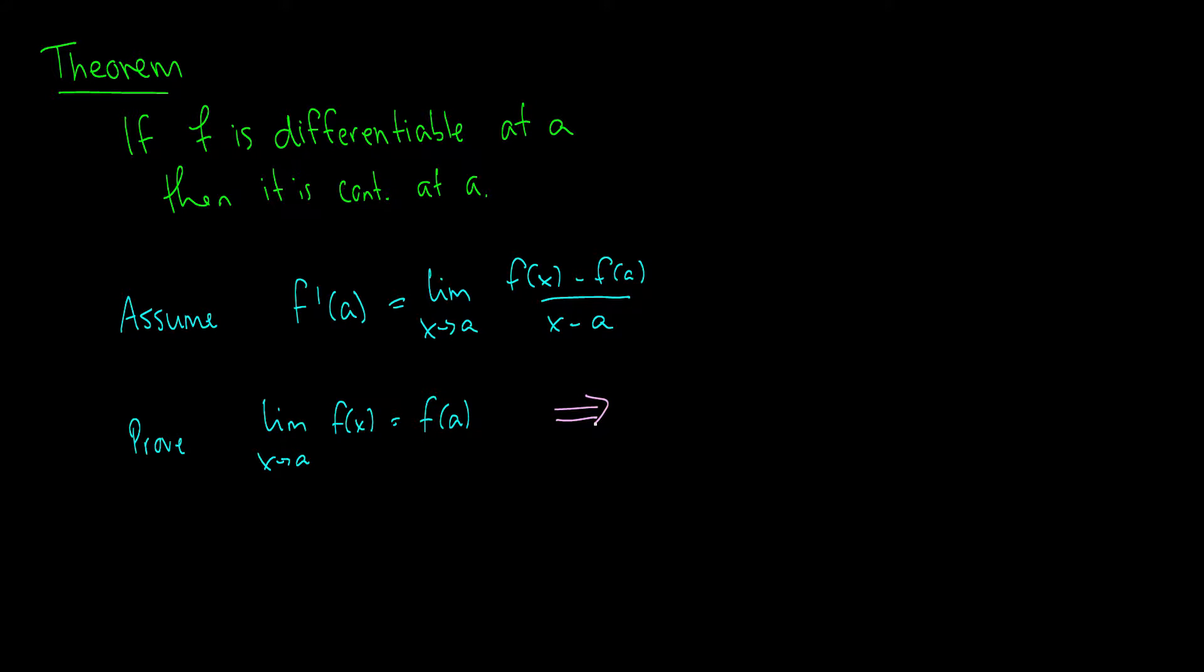I should put one little thing in here. f of a, this is the same thing as writing the limit as x approaches a of f of a. They both come out to the same thing. So we can write that in, and this is going to help us with one of our laws, mainly our limit laws of addition or subtraction. So we want to prove that the limit as x approaches a of f of x minus f of a is equal to zero.